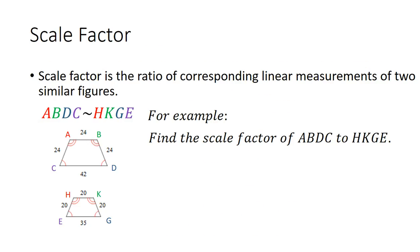Now let's look at scale factor. Scale factor is the ratio of corresponding linear measurements of two similar figures. We're going to look at the polygon we just examined — ABDC is similar to polygon HKGE. We're going to find the scale factor of ABDC to HKGE by creating a ratio. We just pick two sides to compare; we don't have to do all four since we already know the polygons are similar.